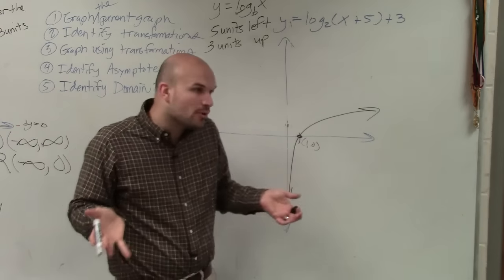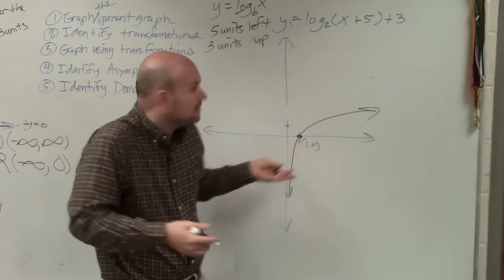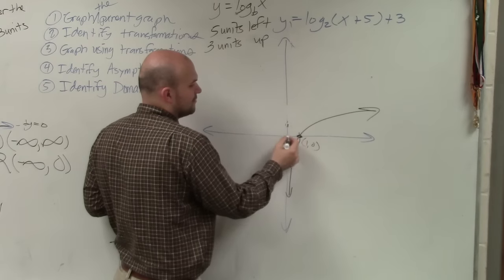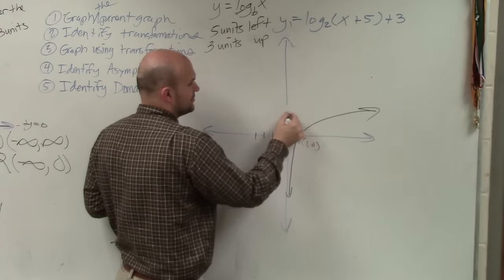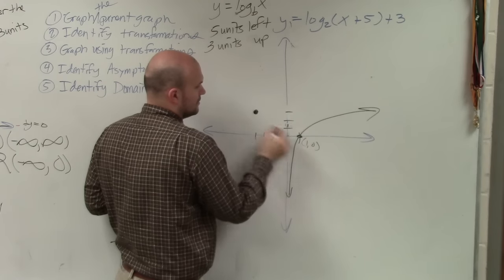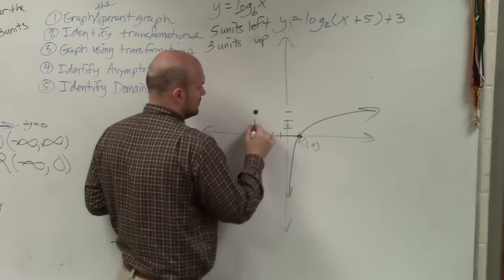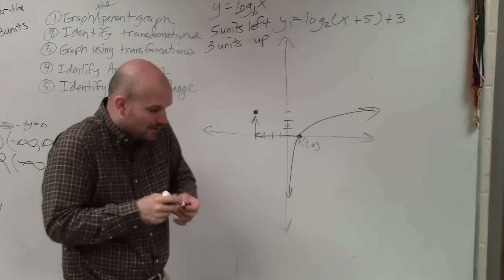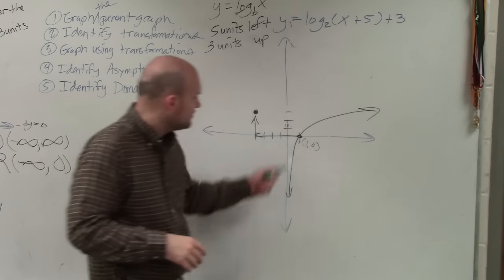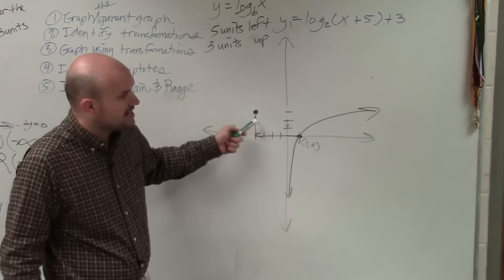So now, guys, there's only one point I showed you for this. (1,0). So let's go 5 units left. 1, 2, 3, 4, 5. And let's go 3 units up. 1, 2, 3. You guys see what I did? So all I'm doing is taking the exact same graph and shifting it 5 units left and 3 units up.